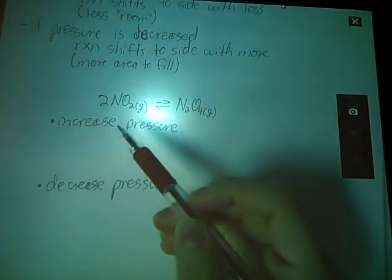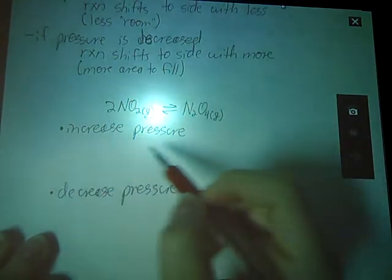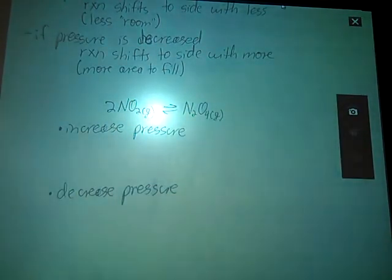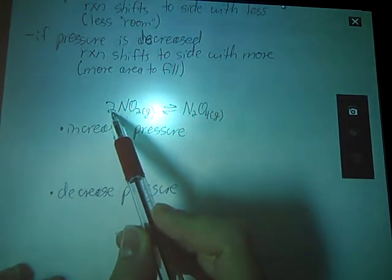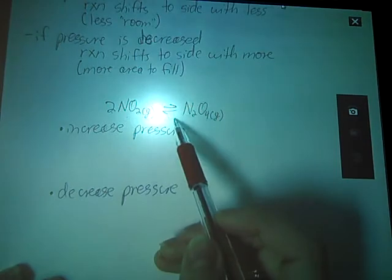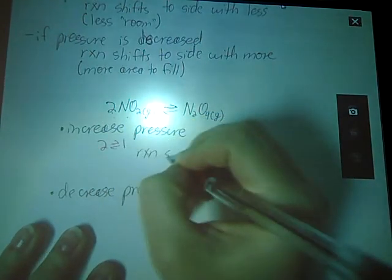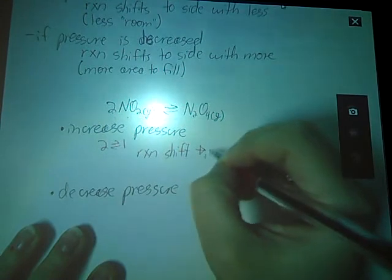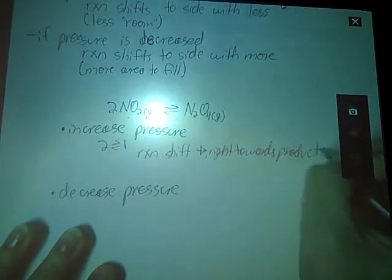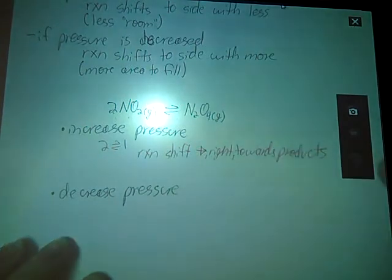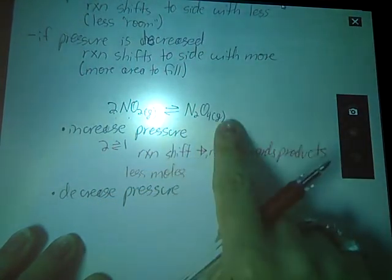Two nitrogen dioxide molecules reacting to form one dinitrogen tetraoxide molecule. If I were to increase my pressure, so I have decreased space, if you will, for those molecules to bounce around. If you look at the left side of my reaction, I have two moles of gas, as indicated by my two here. On the right, I have one mole of gas. So my reaction is going to shift to the side that has less, to the right. And again, you can usually use one of these phrases. I'm just writing them all, so you'll have seen them.